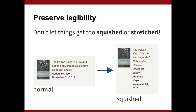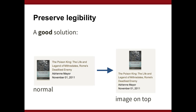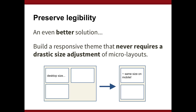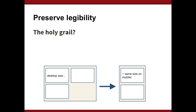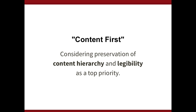We don't want things to get too squished. Here's an example of something getting squished in a responsive design where the text isn't really legible — lines are being broken. A good solution is to have things shift around as you get down to smaller sizes. An even better solution: can we build a responsive theme and pattern that never requires a drastic size adjustment of our blocks? This has been a fundamental goal as we build our themes — we think of it as a content-first approach to web design, where preserving content hierarchy and legibility is top priority.